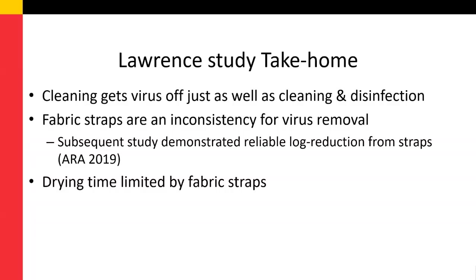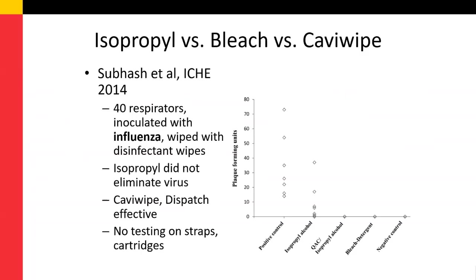Regarding disinfectant type, a 2014 study by Subhash and colleagues took 40 elastomeric respirators, inoculated them with influenza virus, and wiped them with three different types of disinfectant wipes. For influenza, isopropyl alcohol did not completely eliminate live virus, but CaviWipes and Dispatch both did. That study did not test the straps or cartridges, which is important to consider when selecting disinfectants relevant for COVID-19.